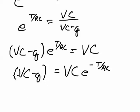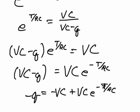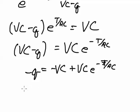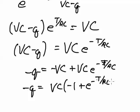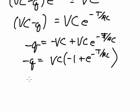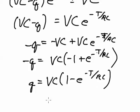Now then, let's subtract VC from both sides. And that will look like negative q equals negative VC plus VC e to the negative t over RC. And let's factor out a VC from this. Negative q equals VC times negative one plus e to the negative t over RC. And finally, let's multiply both sides by negative one, which will give us q equals VC times one minus e to the negative t over RC. And that is exactly what I wanted this to come out to be.